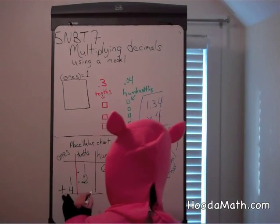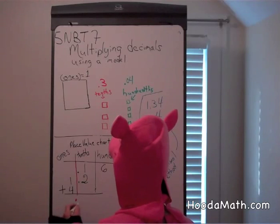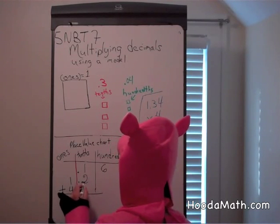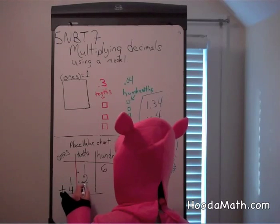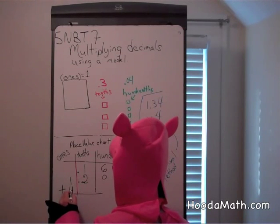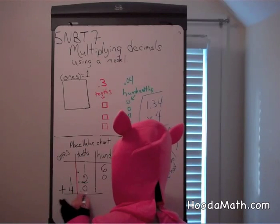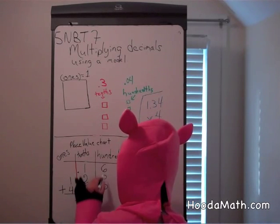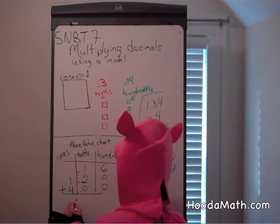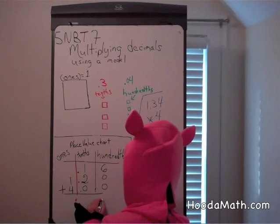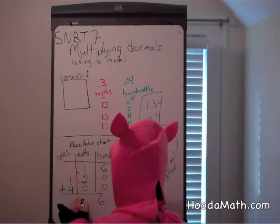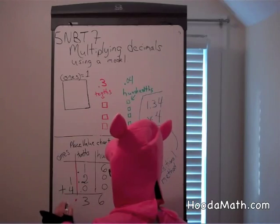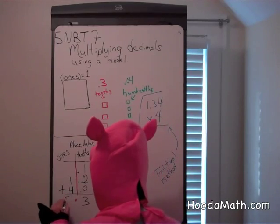Let's add this up. First, let's put our places in. One and two tenths means one and two tenths and zero hundredths. Four means four and zero tenths and zero hundredths. We have our decimal point. Six plus zero plus zero is six. One plus two is three. And one plus four is five.